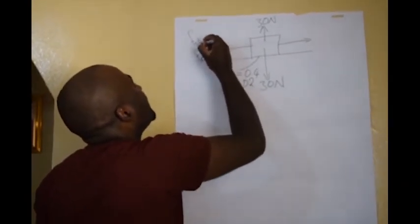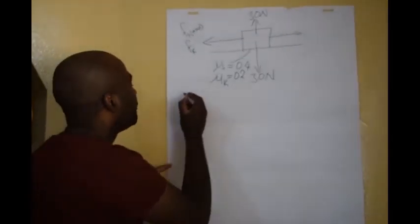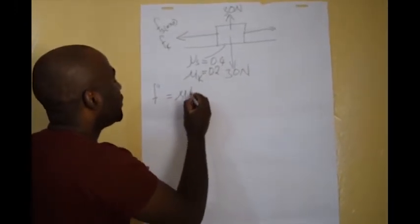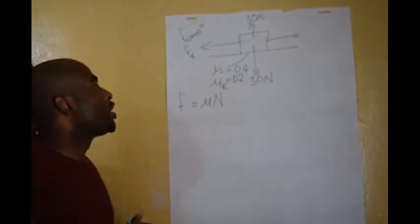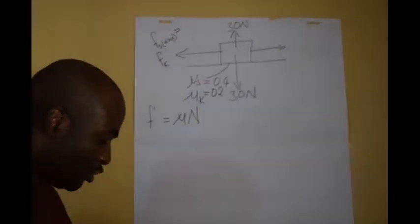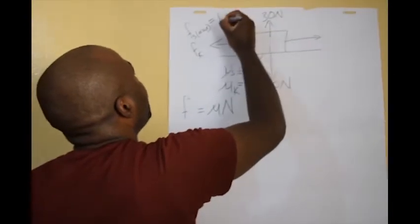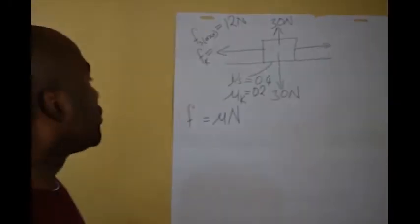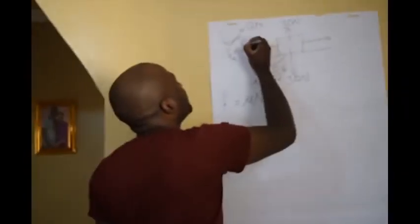So you will be able to establish the static friction and also the kinetic friction. The static friction will be the maximum. Remember, friction equals mu times the normal. For the maximum static friction, mu is 0.4, so 0.4 times 30 gives you 12 newtons. Then the kinetic friction is 0.2 times the normal, which is 30, giving you 6 newtons.